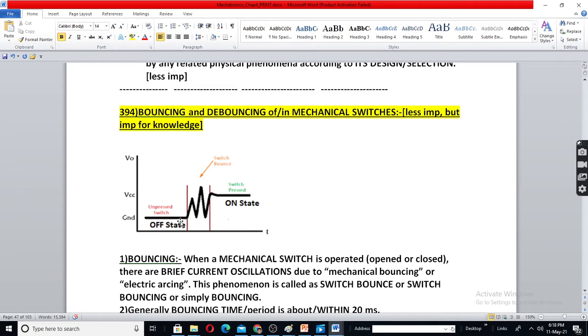It means actually a small arcing that takes place when a switch is actuated from off state to on state. When you switch on a switch or switch off it, while going it does not go directly to on state. It goes to on state, again disconnects for a short period, may not be this much, only some milliseconds. There will be small arcing taking place in the contact, this is called as bouncing.